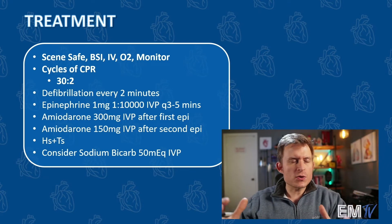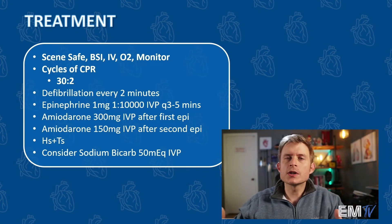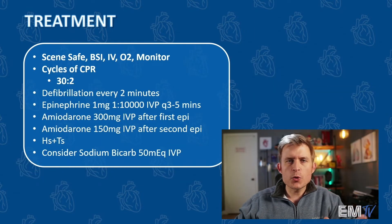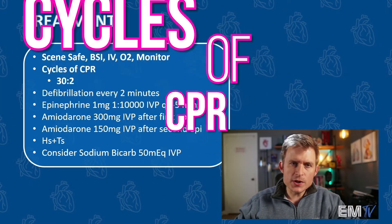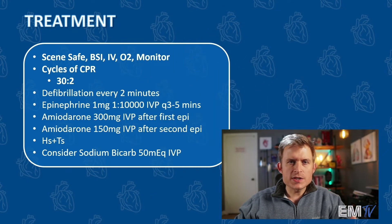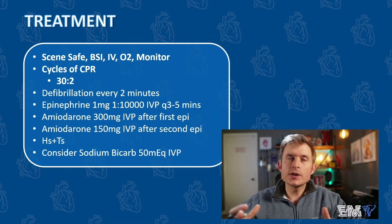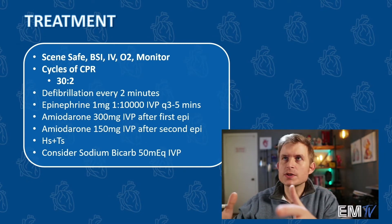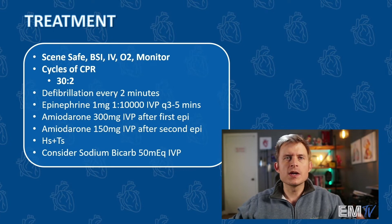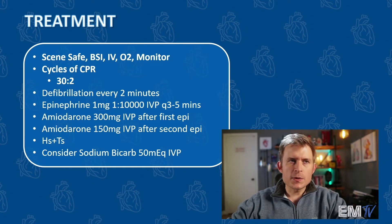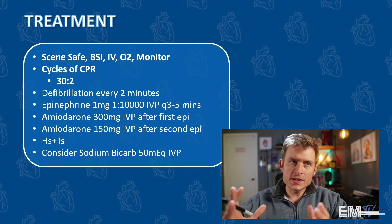So the first thing, as always, we're going to regurgitate the mantra: scene safe, BSI, IV/O2/monitor. At this point, we'll perform cycles of CPR — 30 compressions and two breaths. We'll defibrillate every two minutes. With defibrillation, you can say you're going to start at 200 and work your way up to 360, or stay at 200 the whole time, or start at 360 and stay at 360 — whatever your protocol is. Make sure you say defibrillation every two minutes, because pulseless V-TAC is one of the two rhythms for which defibrillation is the definitive treatment. The other one, of course, is VFib.